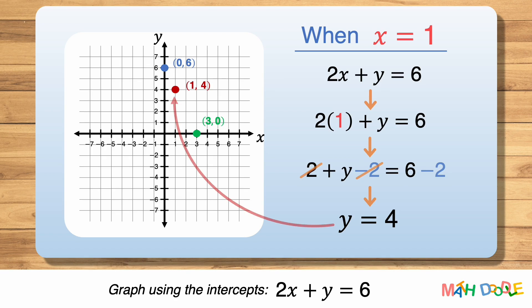Now, we can see that these three points line up. Let's draw a line through these points and put arrows on both ends. This is the line 2x plus y equals 6.